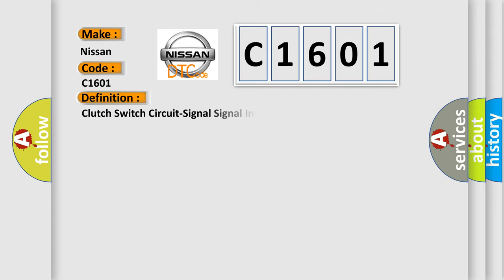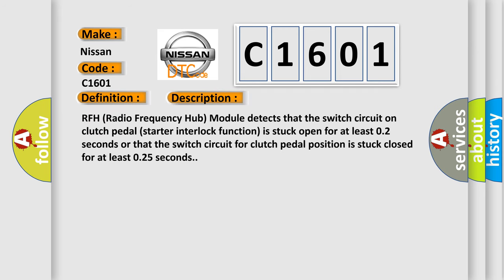The basic definition is clutch switch circuit signal invalid. And now this is a short description of this DTC code. RFH radio frequency hub module detects that the switch circuit on clutch pedal starter interlock function is stuck open for at least 0.2 seconds, or that the switch circuit for clutch pedal position is stuck closed for at least 0.5 seconds.